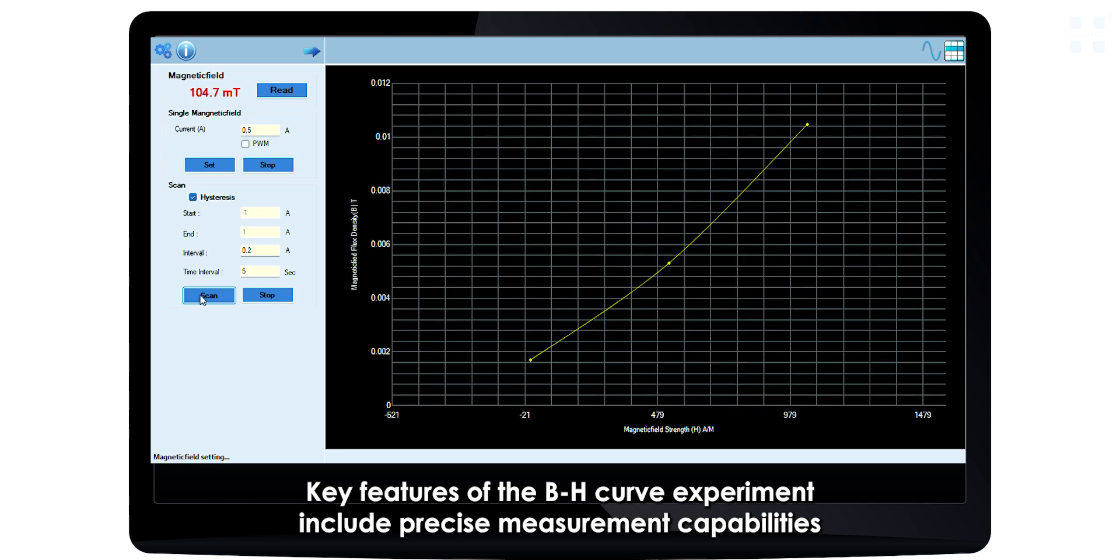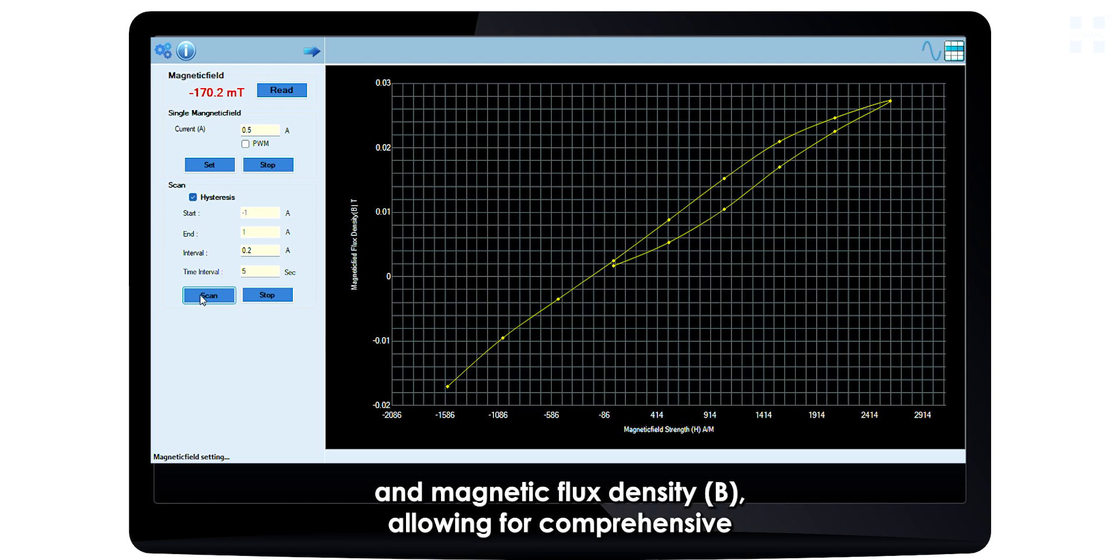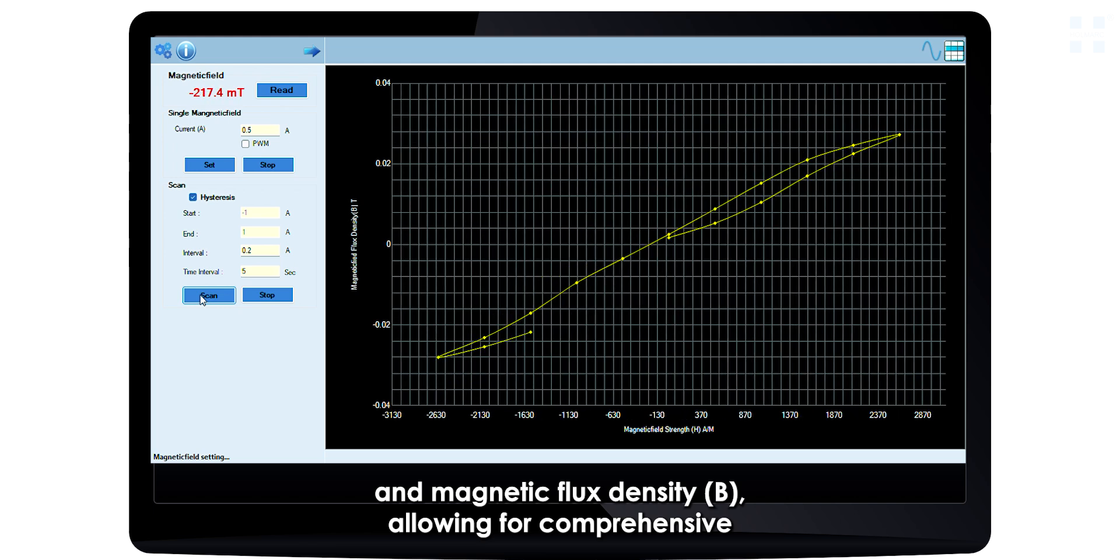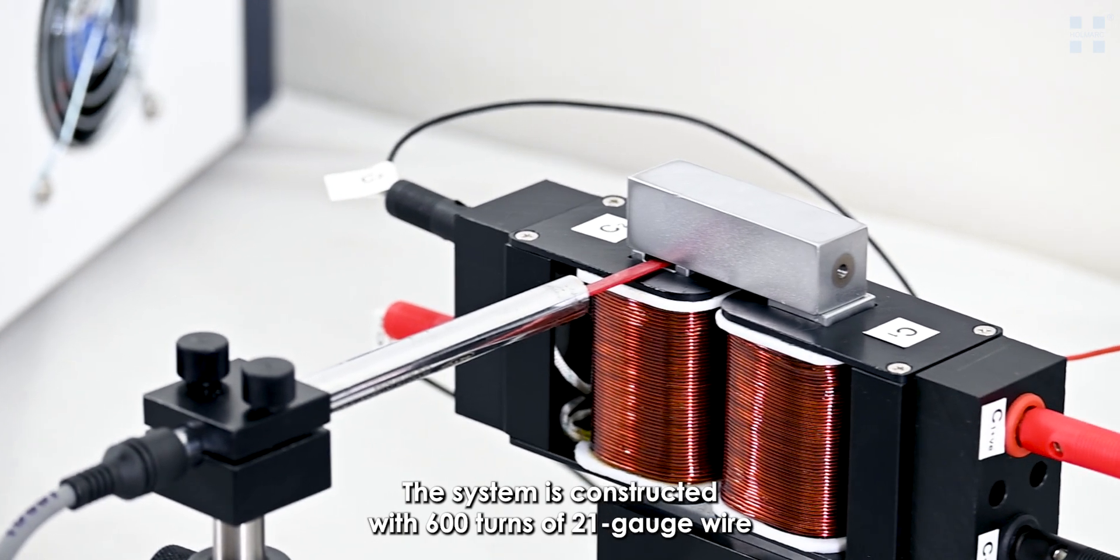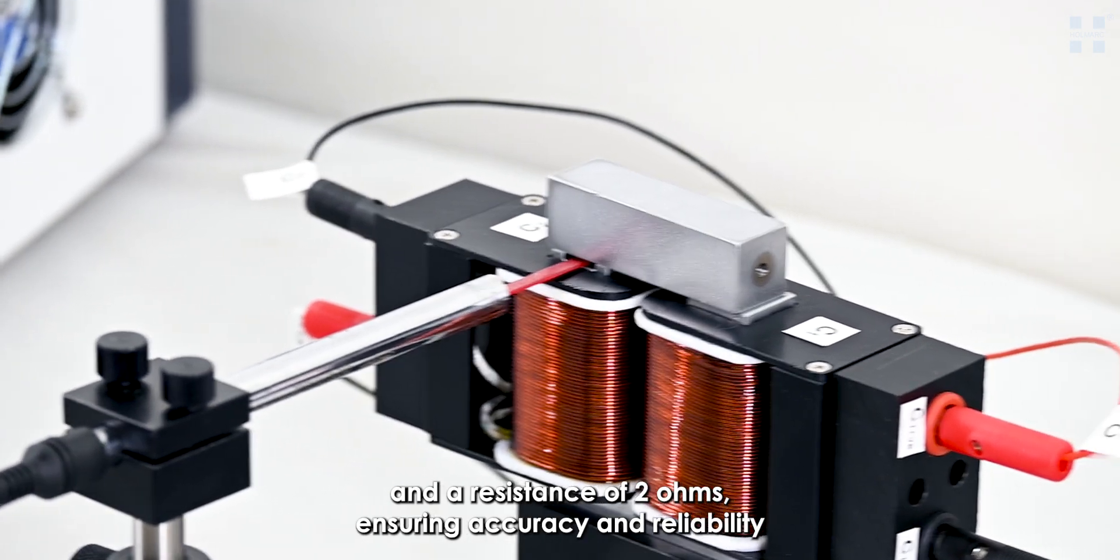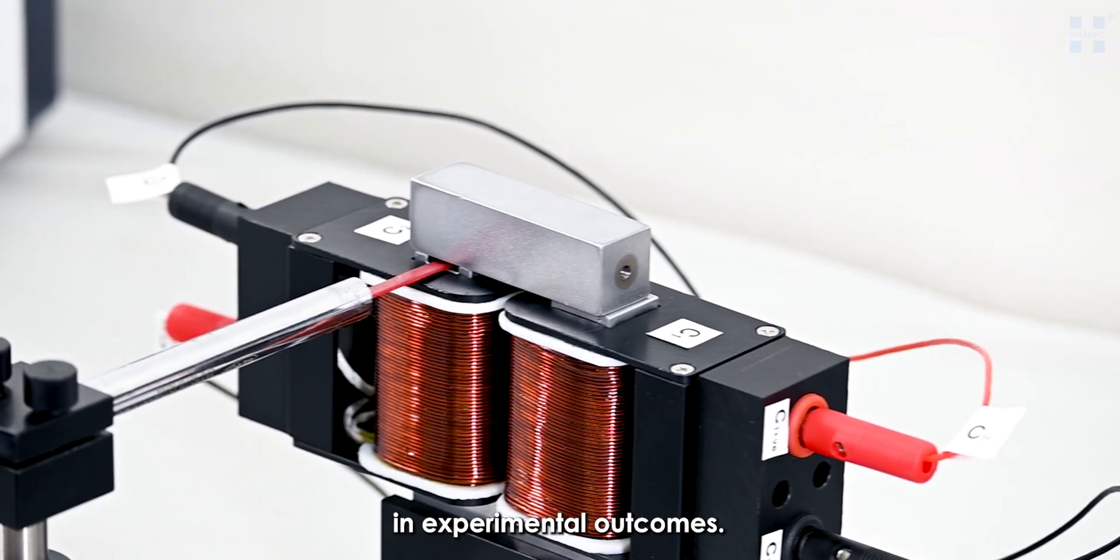Key features of the BH-Curve experiment include precise measurement capabilities for magnetic field intensity and magnetic flux density, allowing for comprehensive recording of the hysteresis loop through dedicated software. The system is constructed with 600 turns of 21-gauge wire and a resistance of 2 ohms, ensuring accuracy and reliability in experimental outcomes.